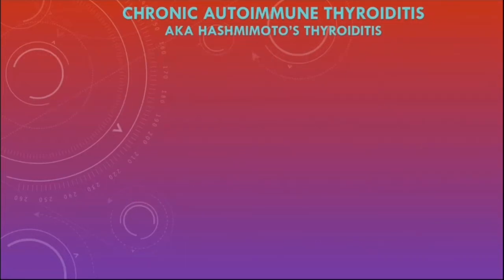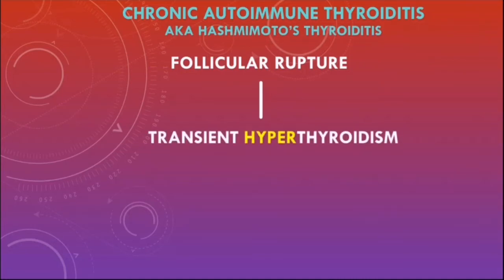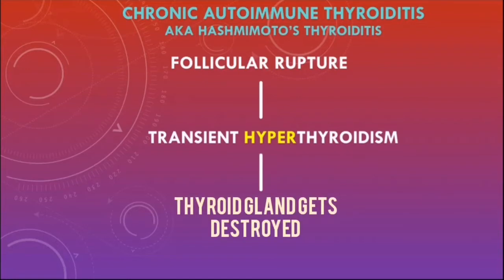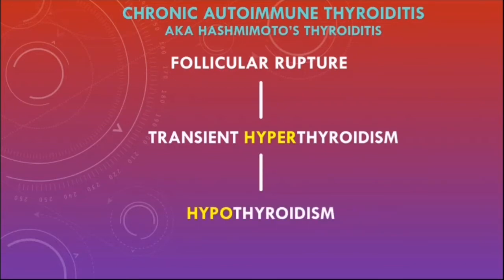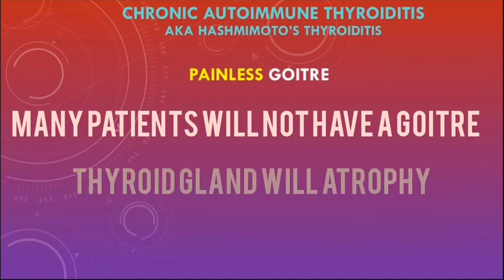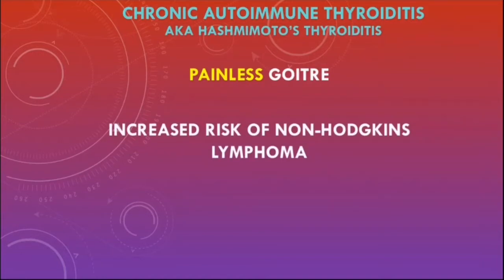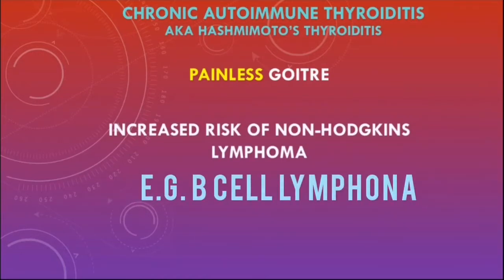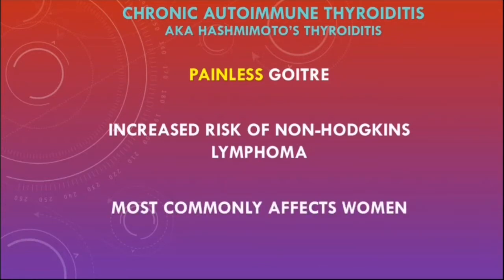Initially, damage leads to rupture of follicular cells, causing T3 and T4 to spill into the blood and produce a transient hyperthyroidism. As the thyroid gland is progressively destroyed, function decreases leading to chronic hypothyroidism. Hashimoto's can lead to a painless goiter, though many patients develop thyroid atrophy instead. Patients have an increased risk of non-Hodgkin's B-cell lymphoma. This condition mainly affects women.